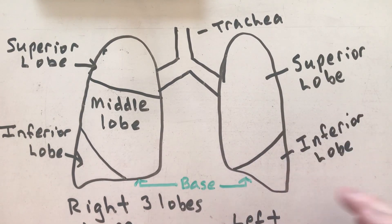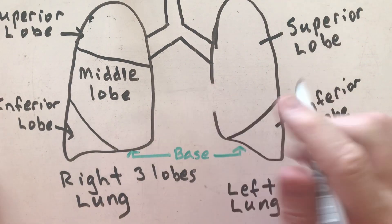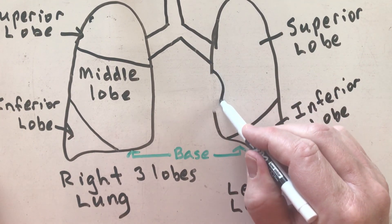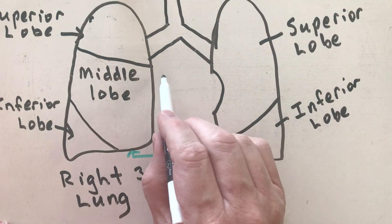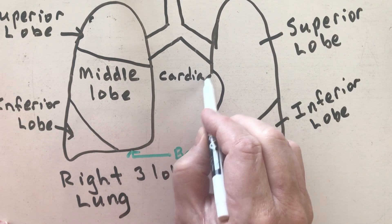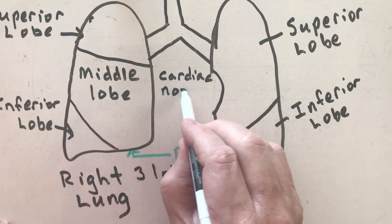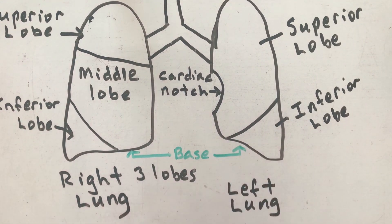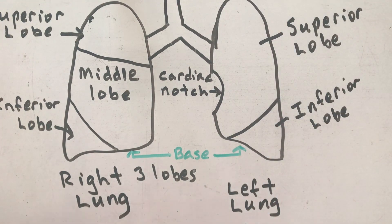On the left lung, I have an indentation called the cardiac notch — you can probably figure out what goes in there. The heart. So the left lung actually has a little indentation for the heart.